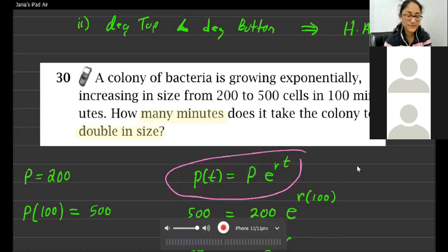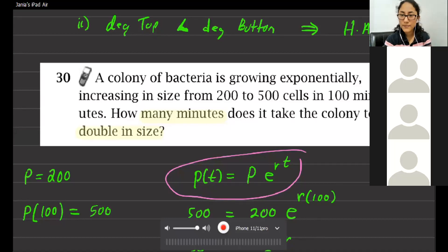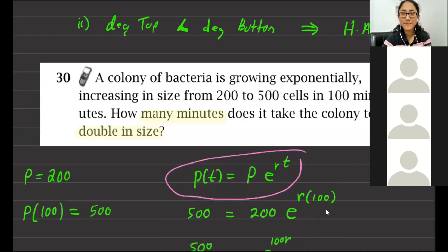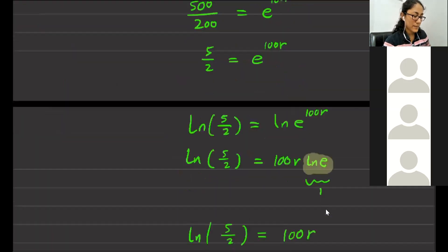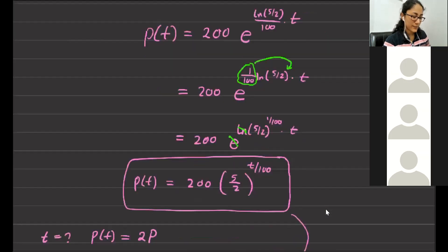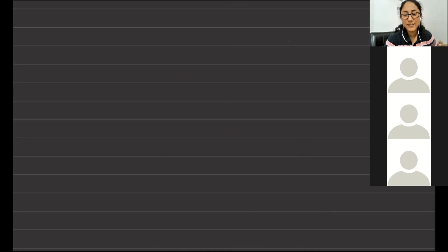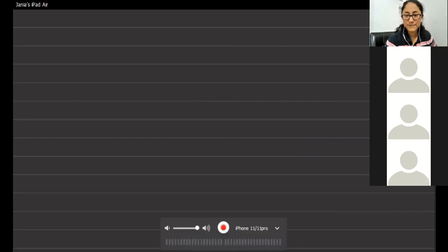Student: Could you do a quadratic equation when E is in it? Don't worry about those — we're not solving them. You can ignore solving the e to the x equations. Student: Is there going to be an area under the curve where C equals e squared? No, because we only used that to derive the natural log and the definition for E.